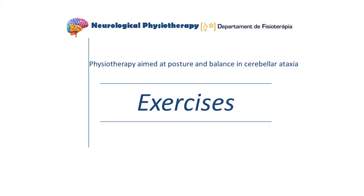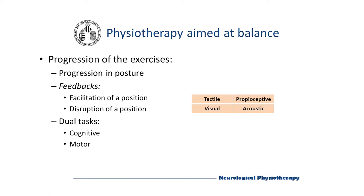Next, some exercises aimed at training posture and balance will be shown. When implementing a rehabilitation session with a patient with ataxia, we must clearly organize it according to a progression in the exercises, in order to establish the appropriate characteristics for the tasks based on the assessment. The adaptations will be based on the chosen posture, the elements that provide feedback — whether facilitators or disruptors of the position — and the work with dual motor or cognitive tasks to automatize the movement. Regarding feedback, we can use different types: touch, proprioceptive such as TheraBand, visual, or acoustic.